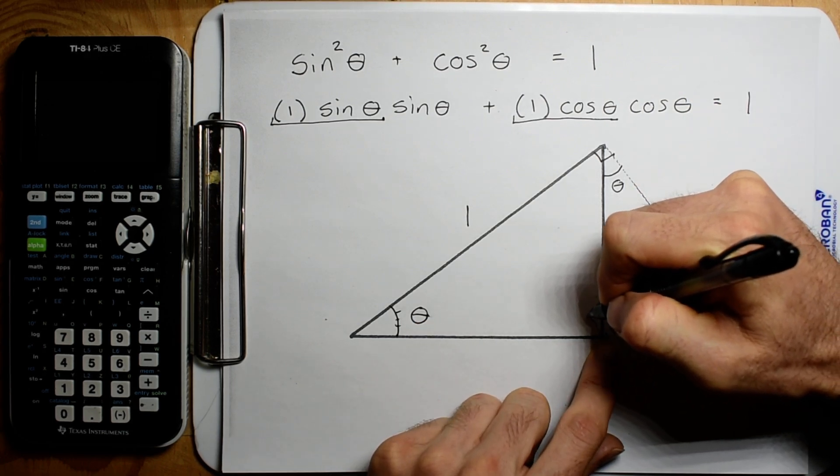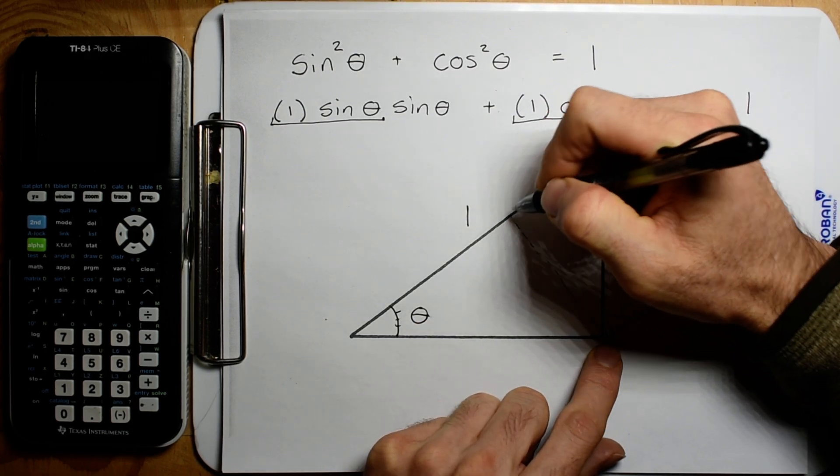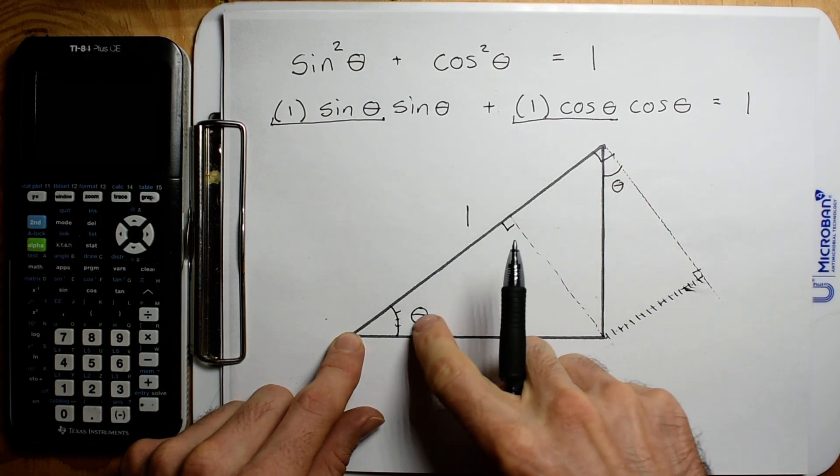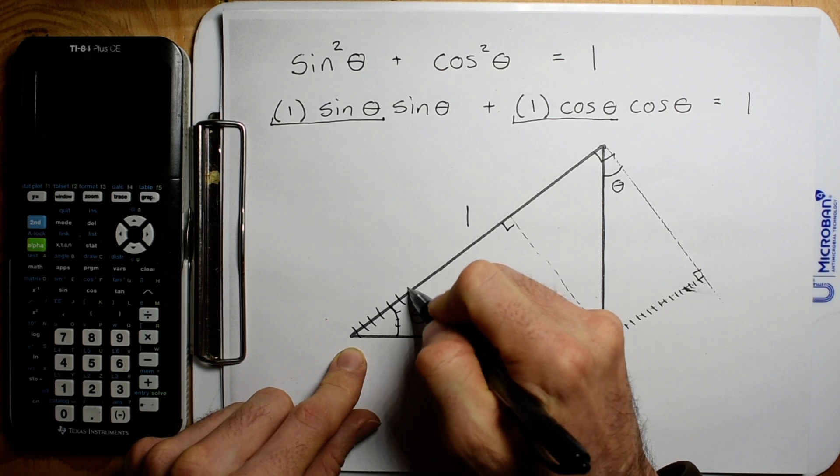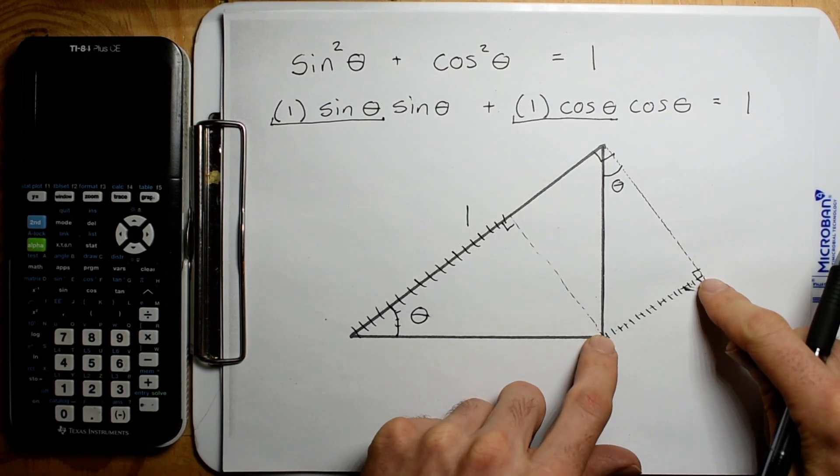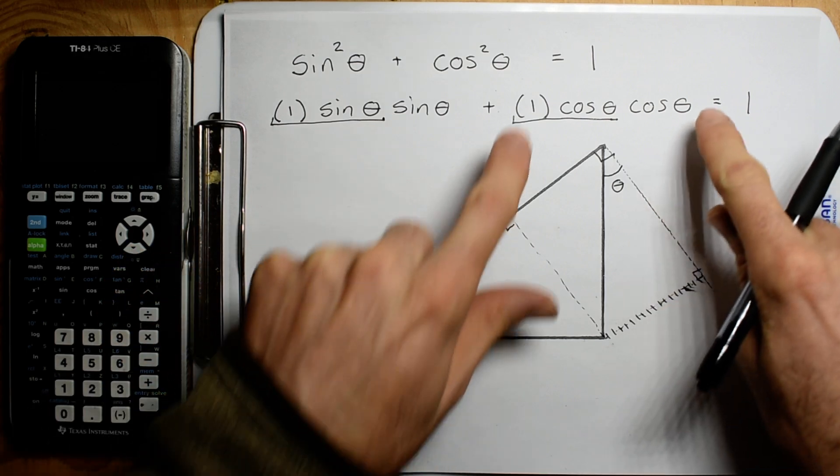Here's my hypotenuse, here's my right triangle. We're going to take the cosine of this angle - that's that length right there. So this was this component, this was this component.